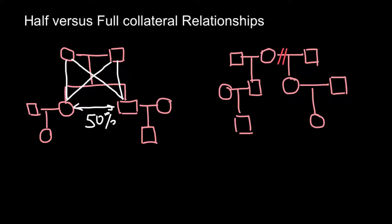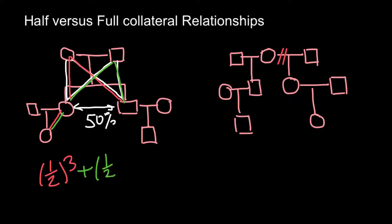This gives us a coefficient of relationship between two full siblings of 50%. How related would a niece and uncle be? Let's find out. The first path goes here, the second pass goes here, and the third pass comes here — so we have one-half to the power of three. But we also have another pathway, giving us another one-half to the power of three. We add these two probabilities of sharing the same genes.